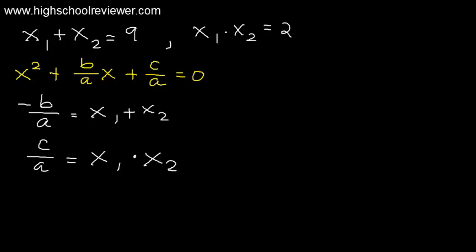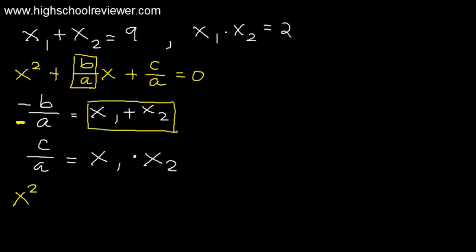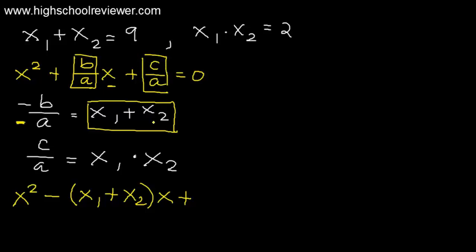We will substitute the values of negative b over a and c over a. Our equation becomes x squared, and instead of b over a, we substitute x sub 1 plus x sub 2 — but since this is negative, we include the negative sign — giving us minus the quantity of x sub 1 plus x sub 2, multiplied by x, plus the quantity of x sub 1 times x sub 2, equals 0.